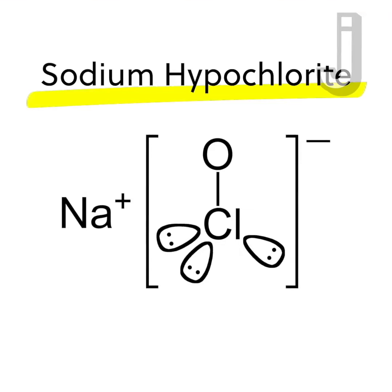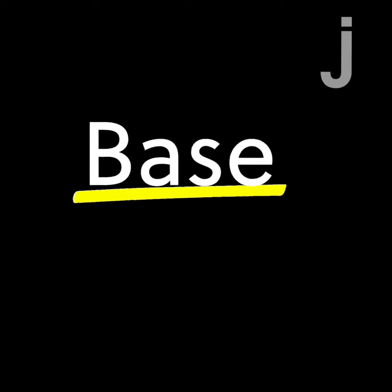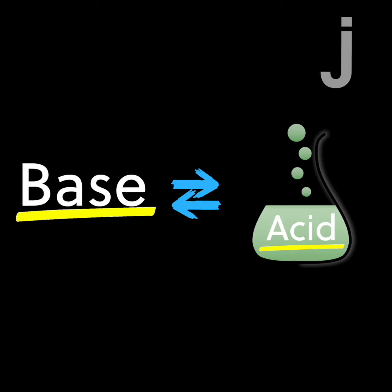Well, technically household bleach is a dilute solution of sodium hypochlorite in water. In chemistry, this type of solution is called a base, and a base is essentially the opposite of an acid.